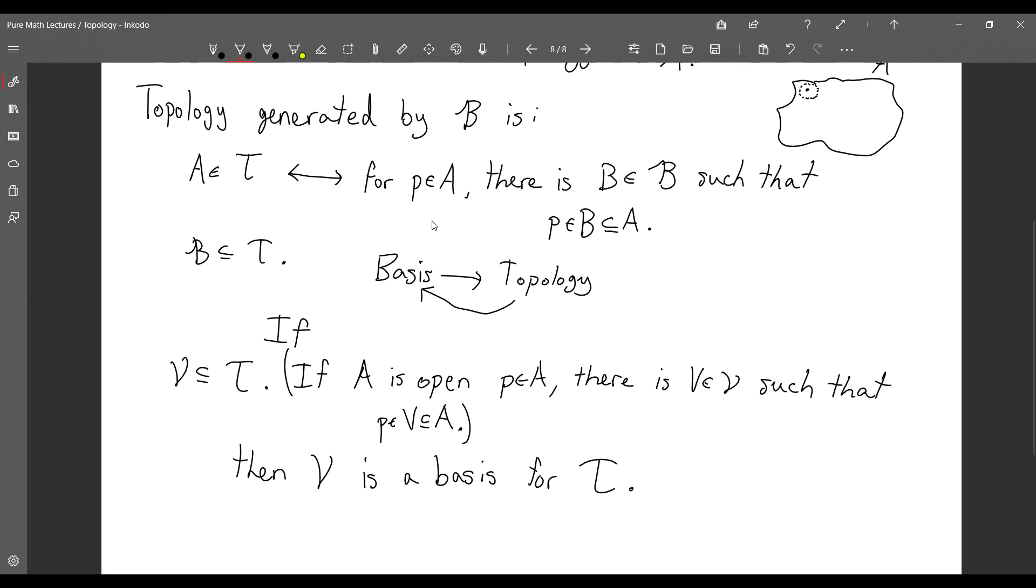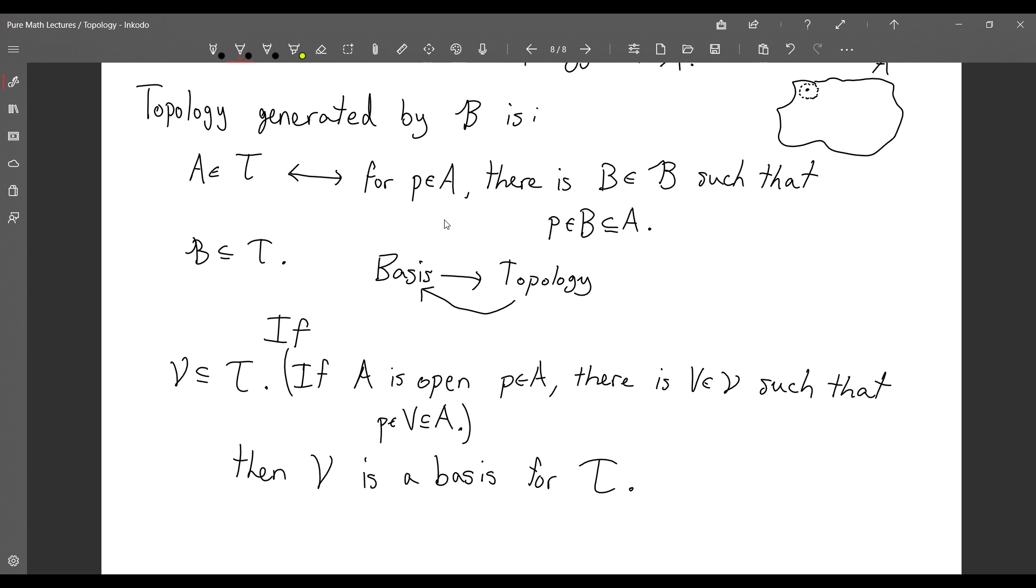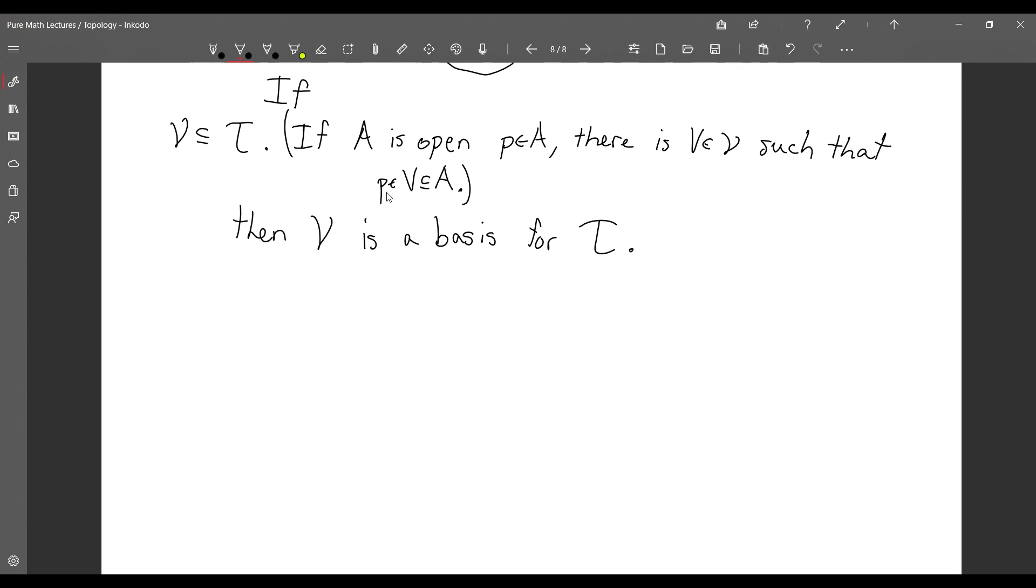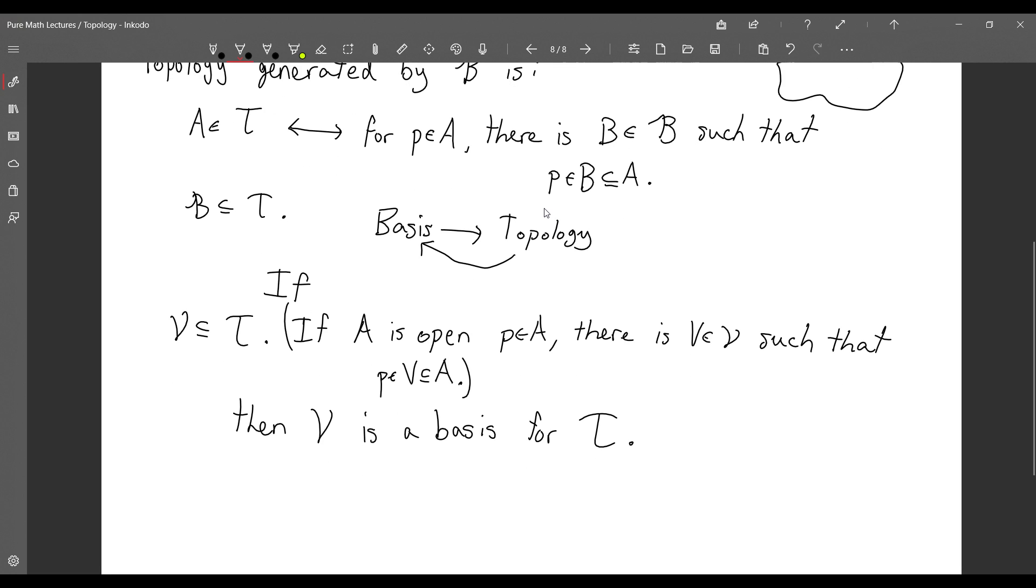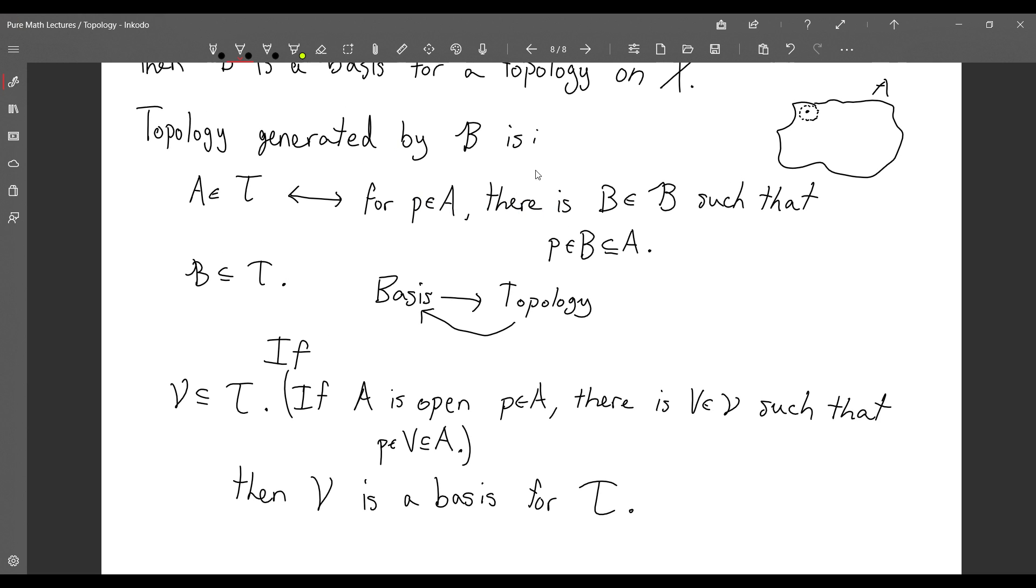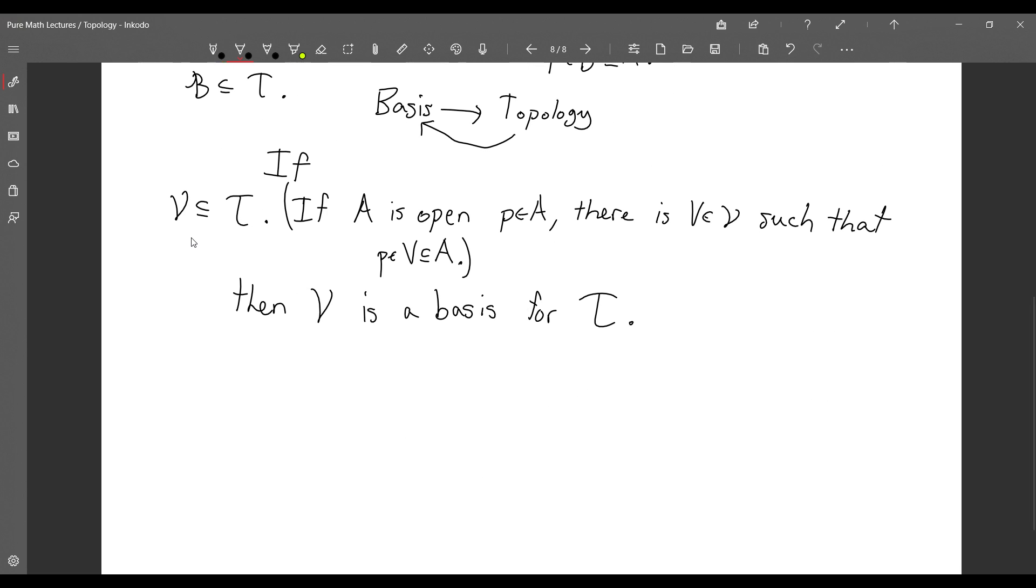Given a topology, this is a characterization for a basis. And it's essentially just this exact same thing that we wrote here, because we wrote this sort of if and only if. So this isn't really anything new from this definition. It's just that here we're writing down how we can generate T, and here we're writing down how to identify a basis if we already have our topology.